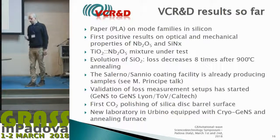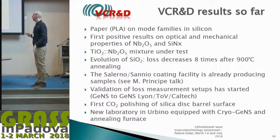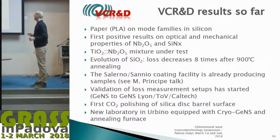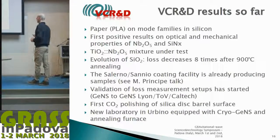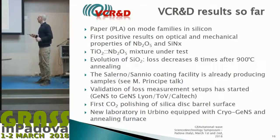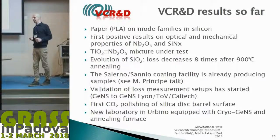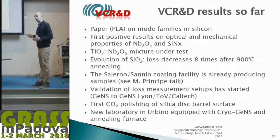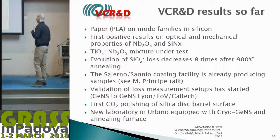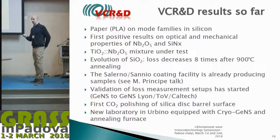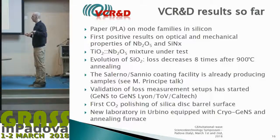Results obtained so far include a paper written for PLA on mode families in silicon, with a similar paper for sapphire in preparation. There are also first positive results on niobia and silicon nitrides, and promising results on silica with annealing—where the loss is very low after strong annealing at 900 degrees. The Salerno-Fisciano facility for coating is already starting production of samples, and we have begun validating methods for measuring coating loss, particularly comparing different GENSO setups.